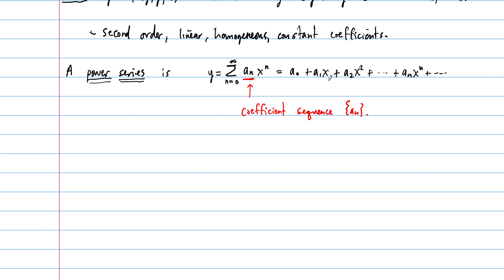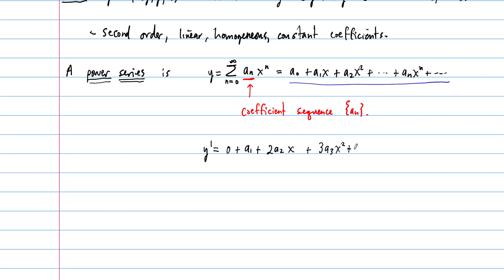If this is our power series Y, then Y prime equals — looking at the terms: the a sub 0 term vanishes, leaving a1 plus 2a2·x plus 3a3·x² plus the general term n·a sub n·x to the n minus 1. In sigma notation, Y prime equals the sum from n equals 1 to infinity of n·a sub n·x to the n minus 1.